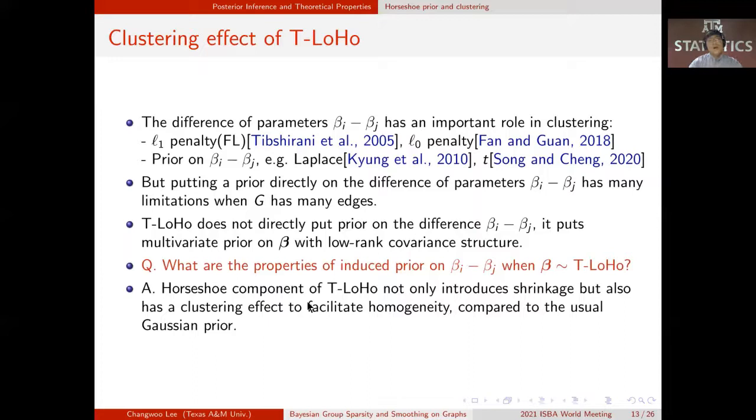So we now discuss how the shrinkage prior of T-LoHo model affects on the clustering. As you've seen in the previous example of fused lasso, the difference of parameters has an important role in clustering. Previous Bayesian approaches tried to put a prior directly on the differences, but it has many limitations when the graph G has many edges. T-LoHo does not directly put prior on the difference, rather it puts multivariate prior on beta with low-rank covariance structure.